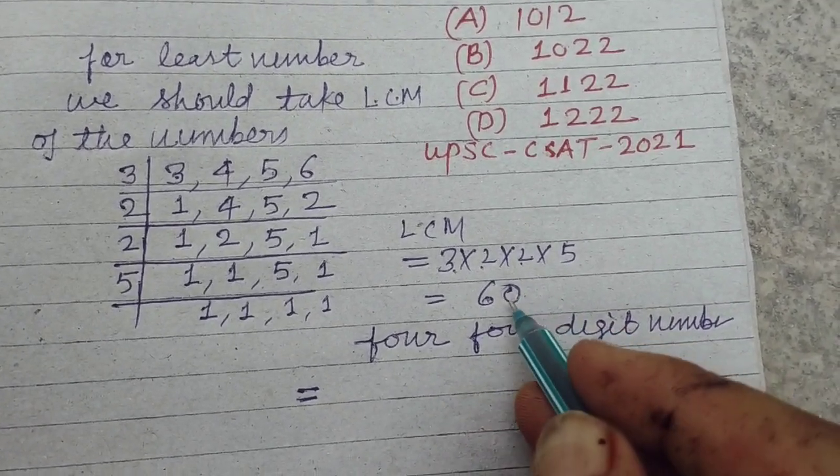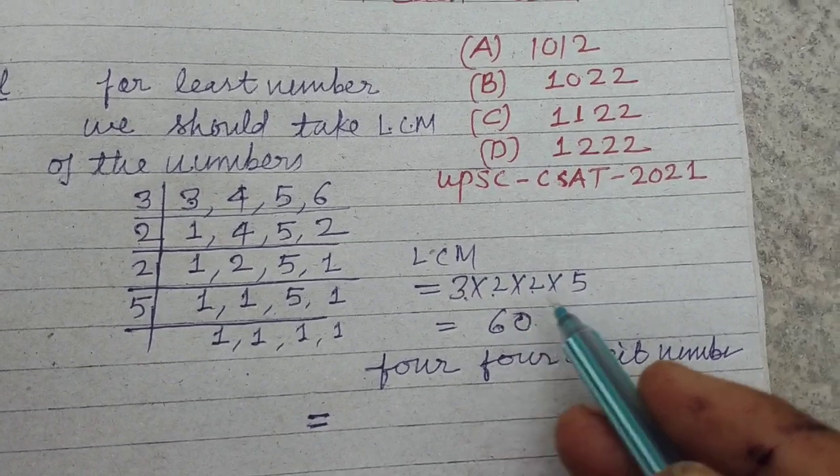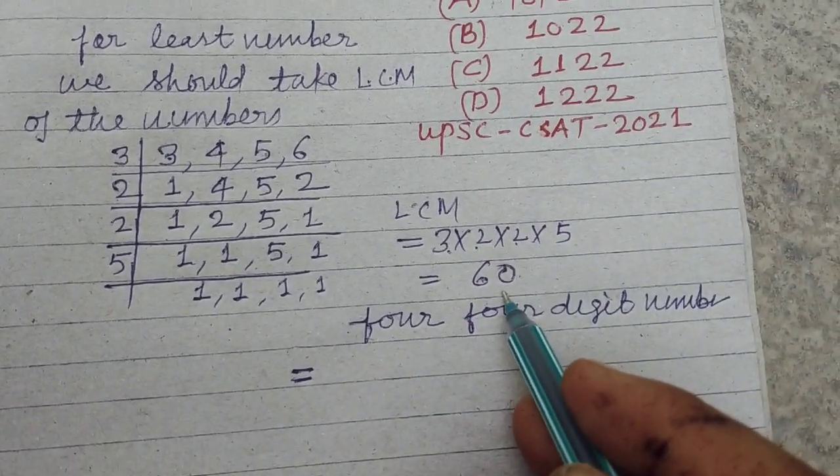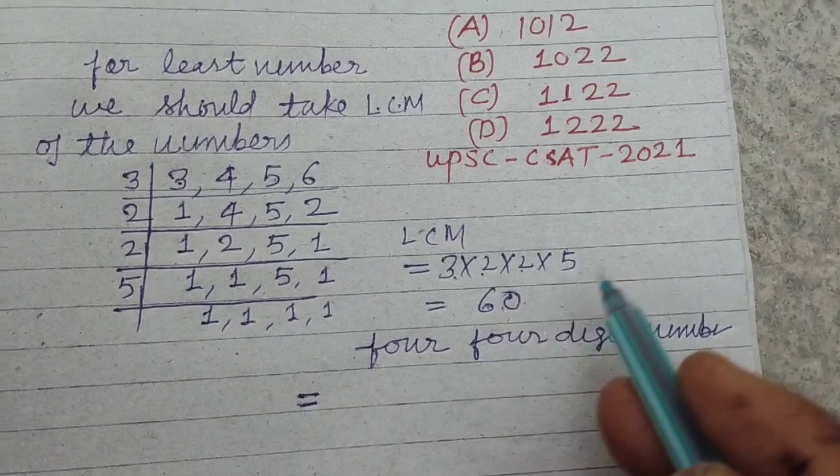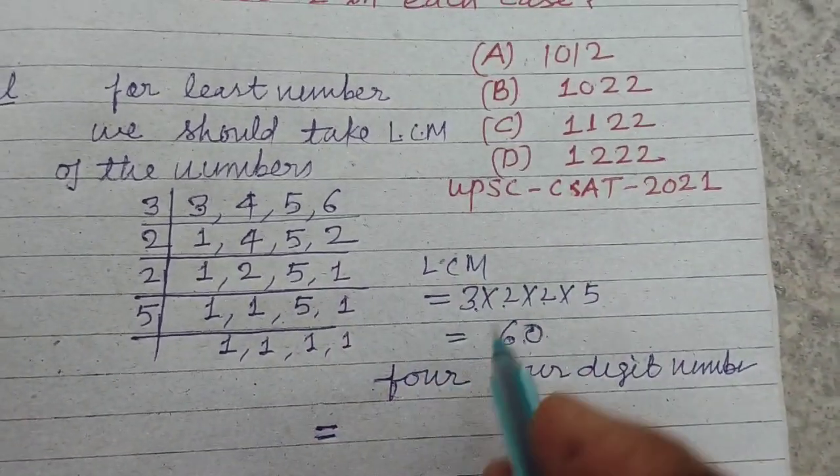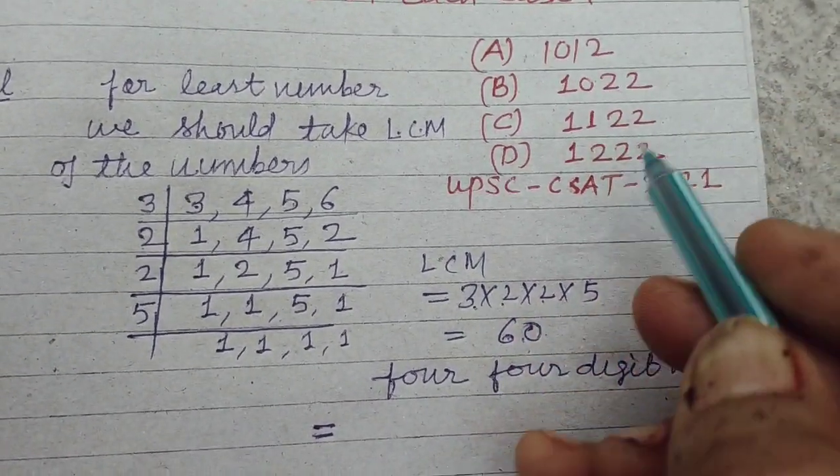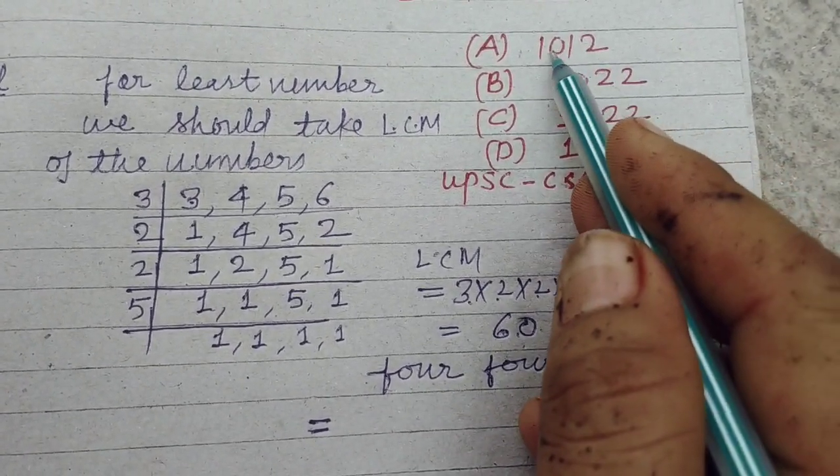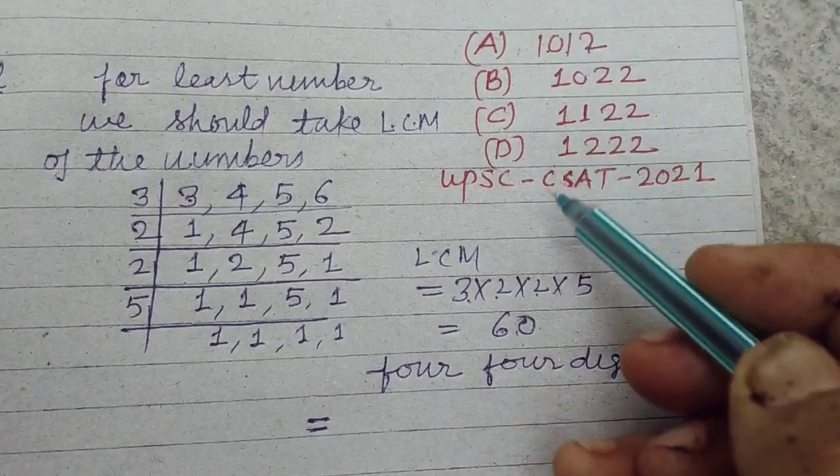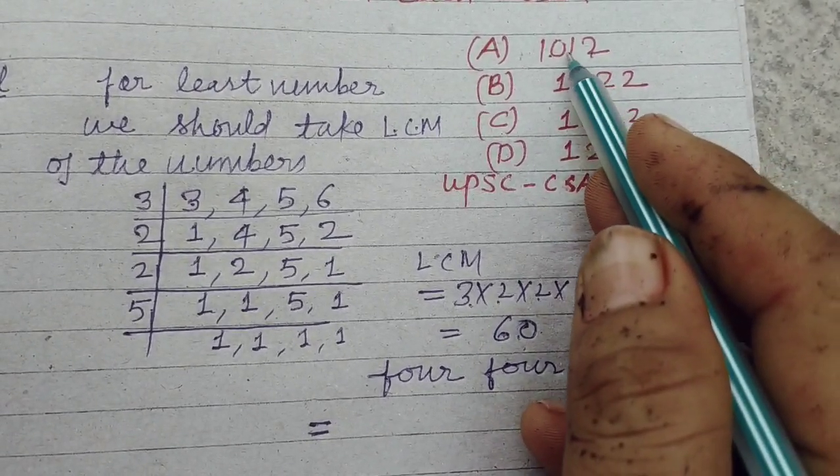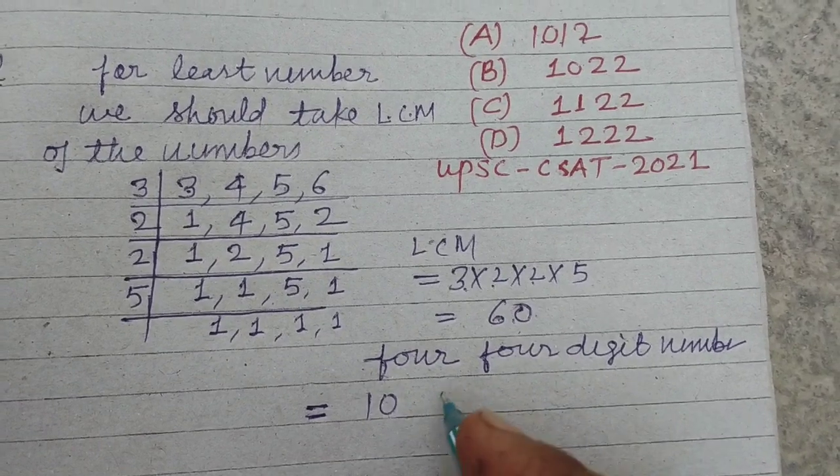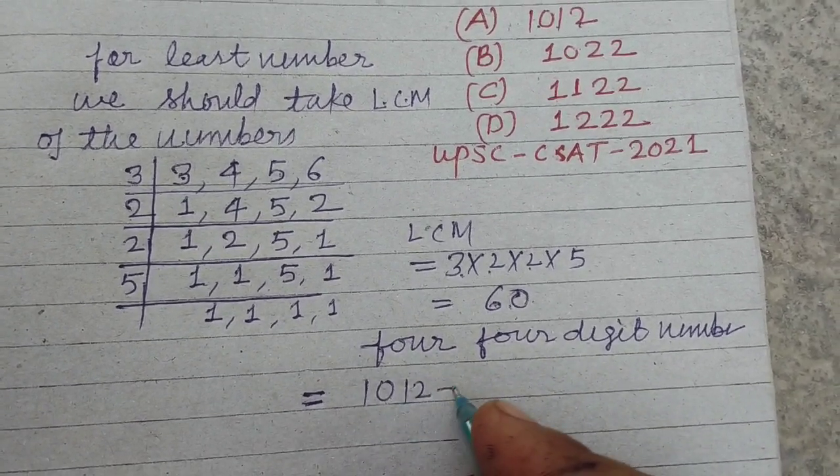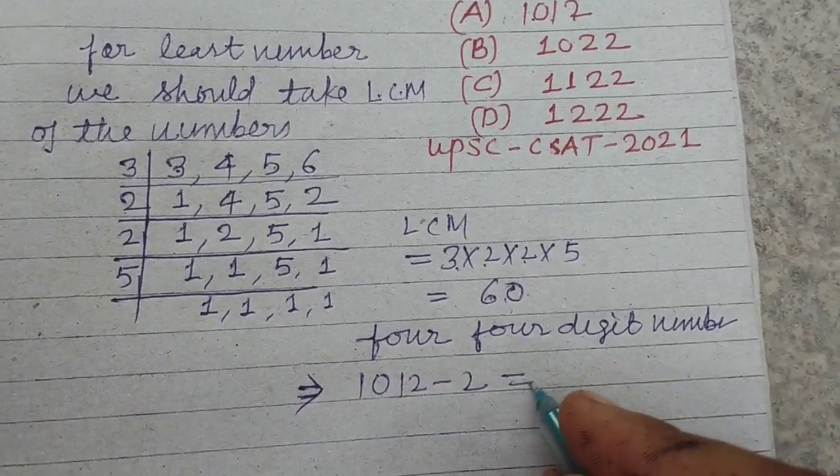But in this question we check which number is multiplied by 60 or divided by 60 and has a remainder of 2. When we subtract 2 from the given number 1012, this is not divisible by 60. 1012 - 2 = 1010.